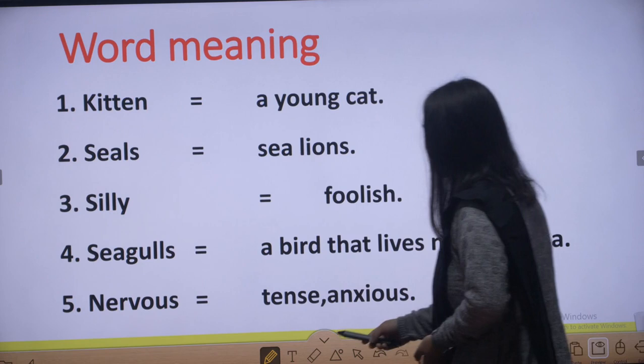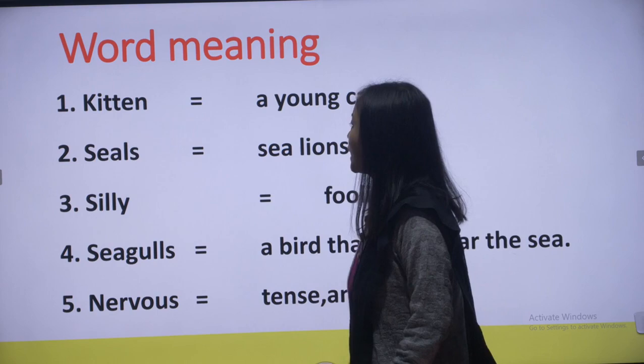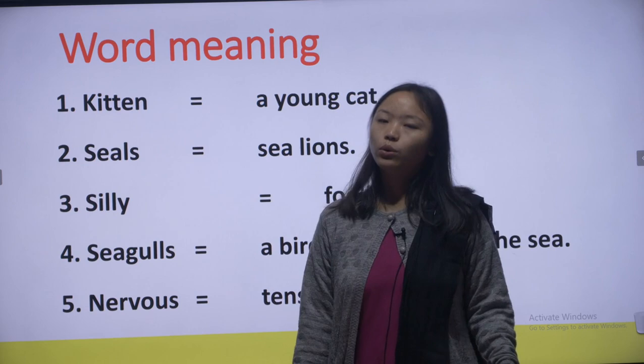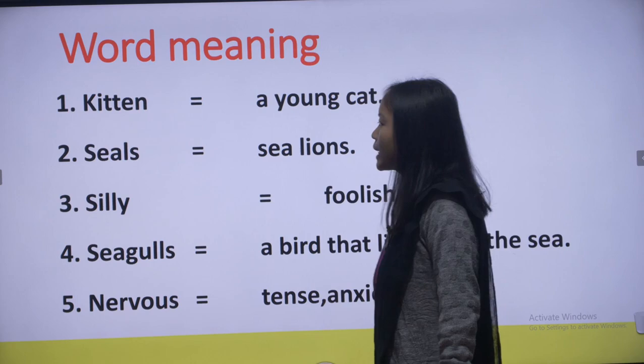Now let's do the new words of this poem. Number one: kitten — K-I-T-T-E-N, kitten. What is kitten? It is a young cat. A baby cat is called a kitten.